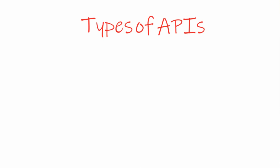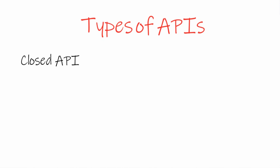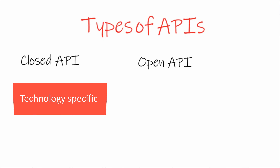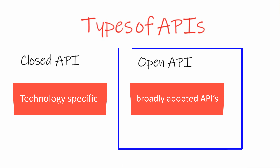There are two main categories of APIs: closed APIs and open APIs. Closed APIs are very technology-specific — for example, when one mobile application opens another application. Open APIs are broadly adopted. Our main focus is open APIs, and in the next video we will look at the most popular open API, which is the RESTful API.